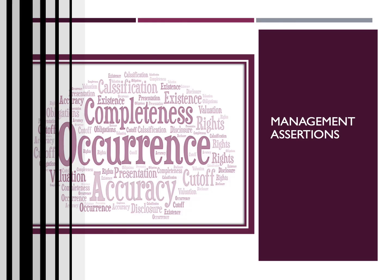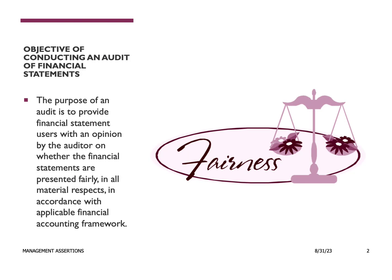These assertions are relevant to auditors performing a financial statement audit in two ways. First, the objective of a financial statement audit is to obtain sufficient appropriate audit evidence to conclude on whether the financial statements present fairly, in all material respects, the financial position of a company and the results of its operations and cash flows. In developing that conclusion, the auditor evaluates whether audit evidence corroborates or contradicts financial statement assertions.